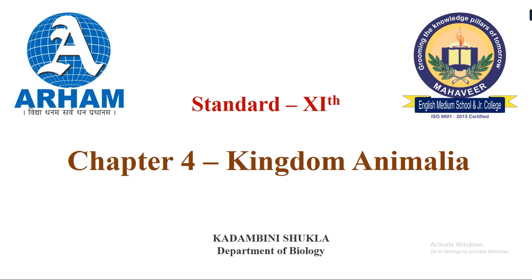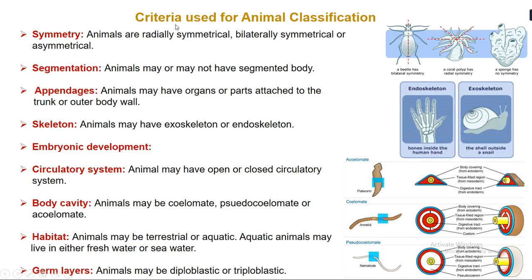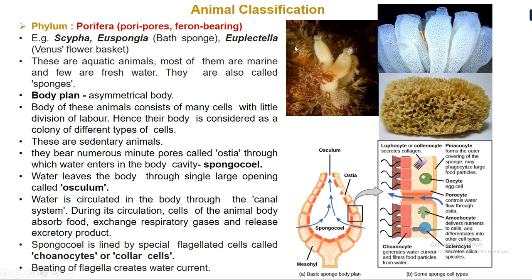Hello students. In the previous two sessions we started with a new chapter, chapter number four, Kingdom Animalia. We studied about the criteria used for the classification of animals and then we moved on to studying the phylums.